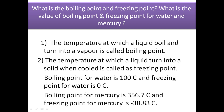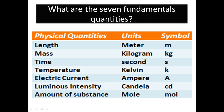Our next question is: what are the seven fundamental quantities? They are length, mass, time, temperature, electric current, luminous intensity, and amount of substance. We should also know their units — for length it is meter and for mass it is kg.